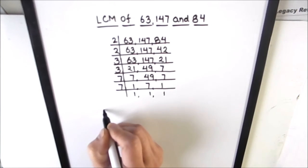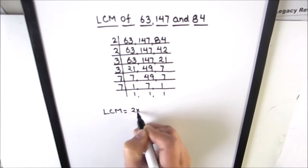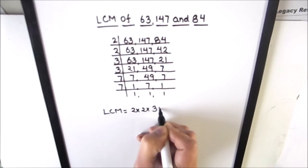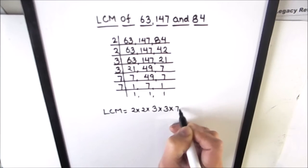Now to find the LCM of the three numbers, we are going to take the product of all the factors which are on the left hand side of the ladder. So 2 times 2 times 3 times 3 times 7 times 7.